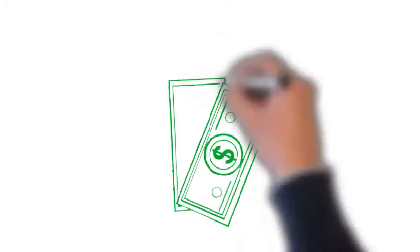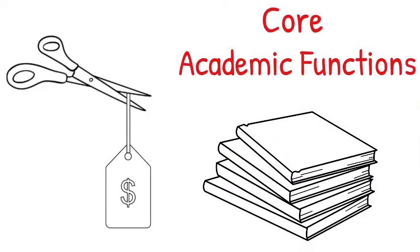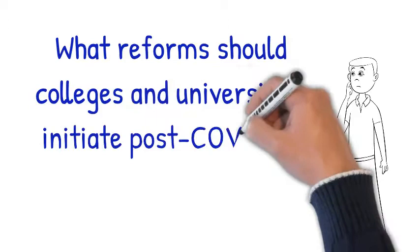Special coronavirus relief funding from state and federal governments will improve cash flow in the short term, but they are not permanent solutions. Colleges must act now to cut unnecessary expenses while preserving core academic functions. What reforms should colleges and universities initiate post-COVID to survive and thrive?